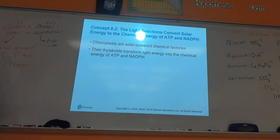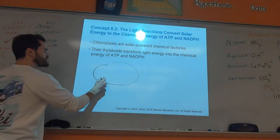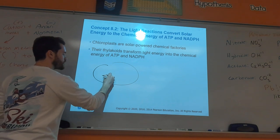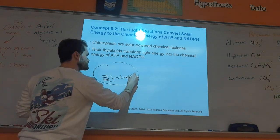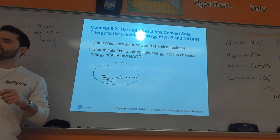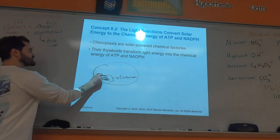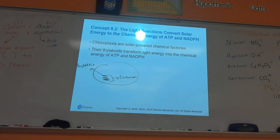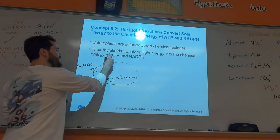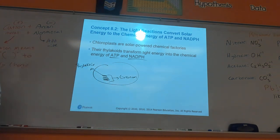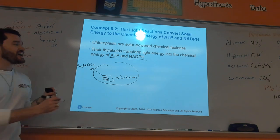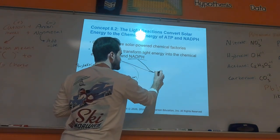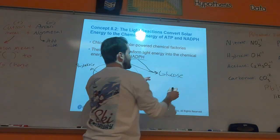Inside the chloroplasts you have a stack of poker chips — the whole stack is called the granum, or grana (grana being plural, granum singular). Each individual poker chip is a thylakoid, and that's where we're doing the reactions of photosynthesis. Inside the thylakoid, in the light reactions, we take light energy and our main purpose is to make ATP and NADPH — we're not making sugar yet in the light reactions.